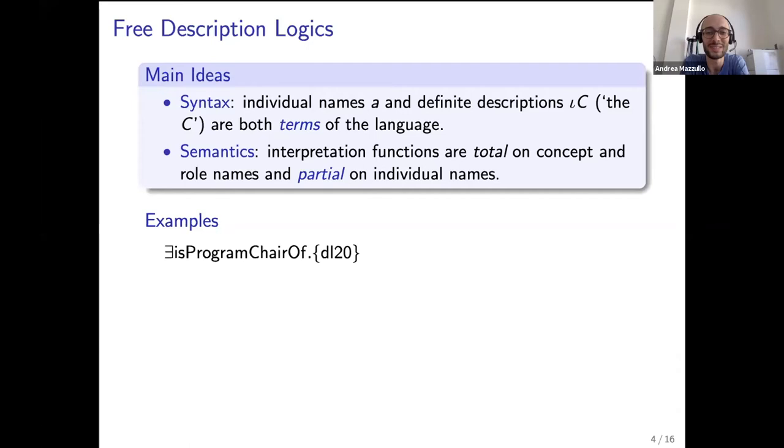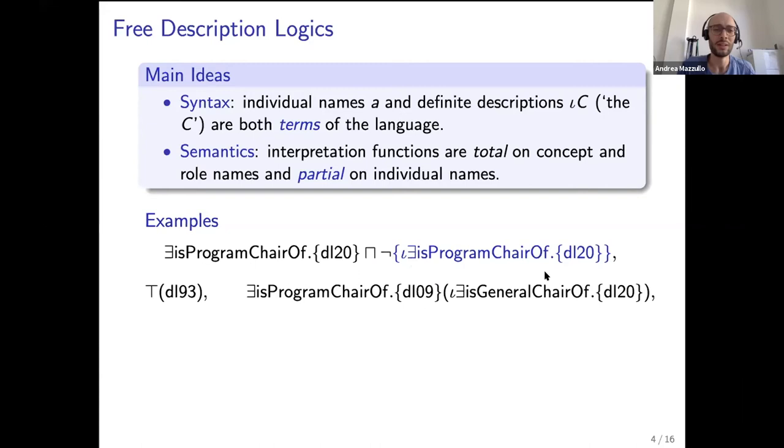Examples of concepts in these languages include the usual ALCO concepts like program chair of DL20 where DL20 is a nominal as usual, but also other nominals constructed from definite descriptions such as the nominal the program chair of DL20, and combinations like the concept that says a program chair of DL20 that is not the one and only program chair of DL20.